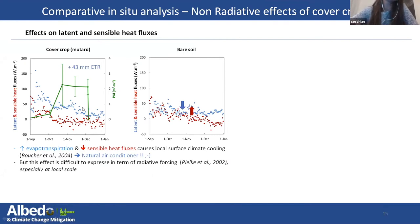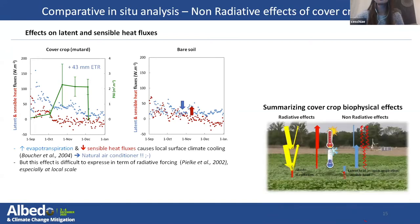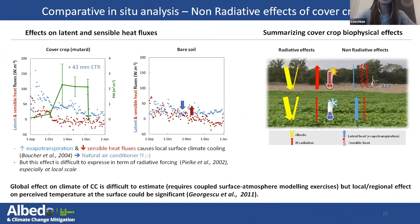During mustard development, evapotranspiration — the latent heat flux — increased with mustard development while the sensible heat flux decreased, causing local surface climate cooling. On the bare soil subplot, it was the opposite: evapotranspiration decreased while heat fluxes increased. This effect is very difficult to express in terms of radiative forcing, especially at local scale. To summarize, the cover crop had a beneficial effect on climate by cooling through: increasing surface albedo, increasing evapotranspiration, decreasing longwave radiation, and decreasing sensible heat flux. The global effect on climate is difficult to estimate because it requires coupled surface-atmosphere modeling, but the local or regional effect on perceived temperature at the surface could be significant.